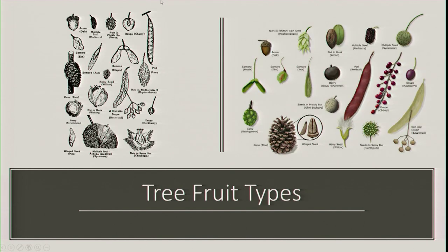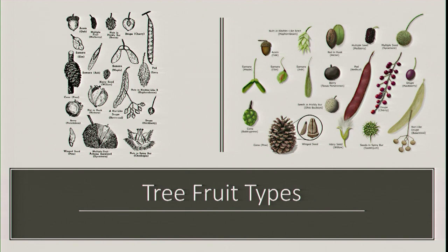We have many different tree fruit types — nuts, acorns, nut and husk. All trees in the Fabaceae family are going to have pods, like a redbud, and all Fabaceae trees are nitrogen-fixing. We have drupes, which is like a cherry or a hackberry. If the tree has a samara, it's going to be in the Aceraceae family — the maple family — though ash also have samaras. Elms have what I call nutlets: on cedar elms they have that little fuzzy nutlet.